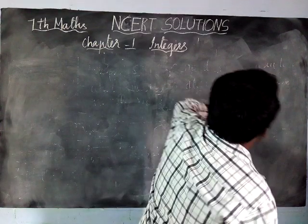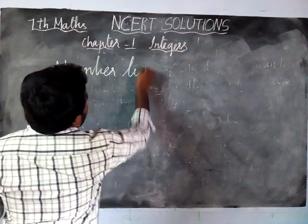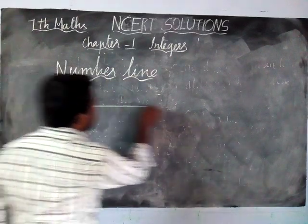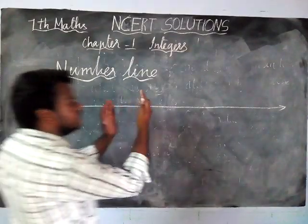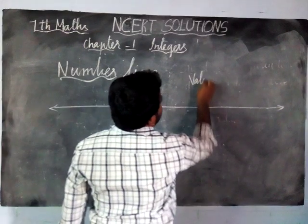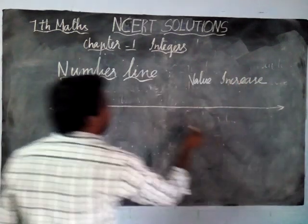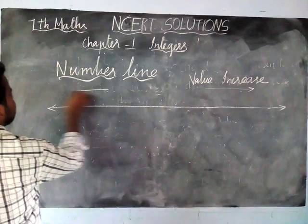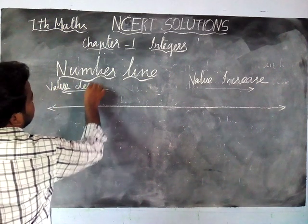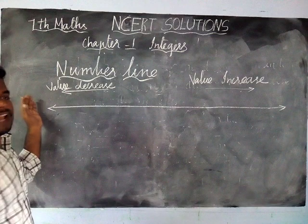Here we have a number line on integers. On the number line, from the right hand side, the value will increase. When we are moving to the right hand side, the value will increase. When we are moving to the left hand side, the value will decrease.